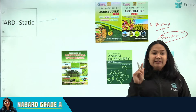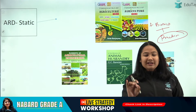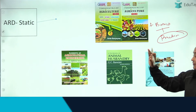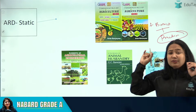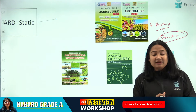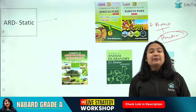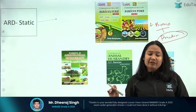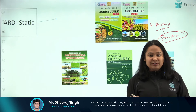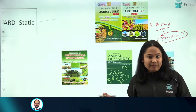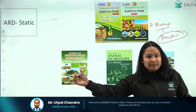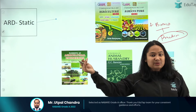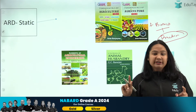Coming to allied sciences — whether you're from an agriculture background or not, sections covering agriculture engineering, animal husbandry, and fisheries may not be covered in your college material. For those you will need to refer to specific books. If you already have course material covering these topics, you don't need any additional books. If you've prepared for RBI, your ESI, quant, reasoning, and English will be covered, but for ARD you'll need to check these books based on your demand.